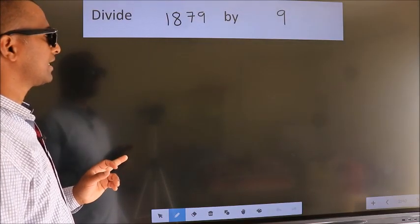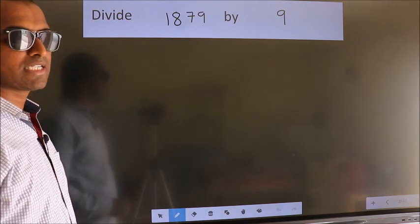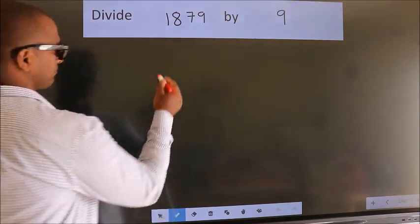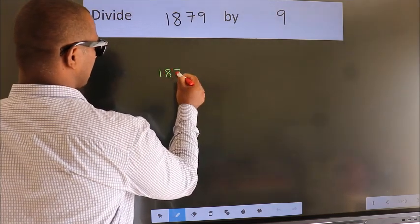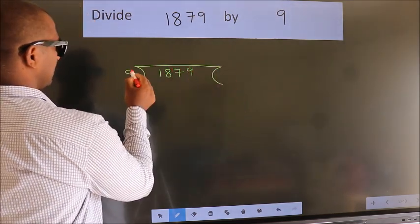Divide 1879 by 9. To do this division, we should frame it in this way: 1879 here, 9 here.